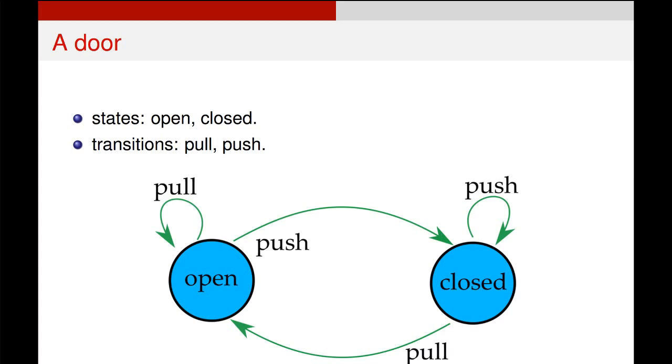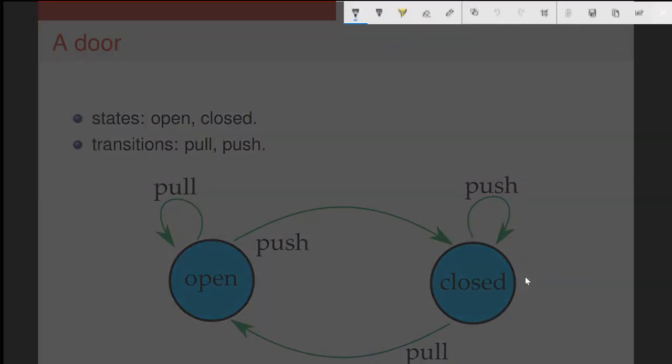For example, a really simple finite state machine might be a model for a physical door. The door has two states at this point in time, open and closed. And the transitions just describe what happens when we apply one of our standard actions to this door. So if we pull a door when it's already open, using this example on the left,